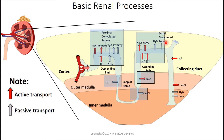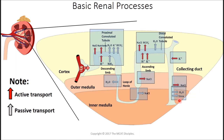At the distal convoluted tubule, there is active reabsorption of sodium chloride and bicarbonate, with passive water following — water reabsorption is always passive. Secretion here involves proton and potassium ion being actively secreted into the tubular lumen. At the collecting duct there is active transport of potassium ion, active reabsorption of sodium chloride, and passive reabsorption of water and urea — about 40–50% of filtered urea is reabsorbed here. Only the collecting duct is under physiological regulation; we can change potassium secretion, sodium chloride reabsorption, water reabsorption, and the number of aquaporin channels.